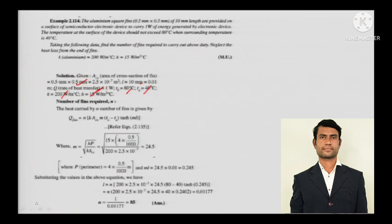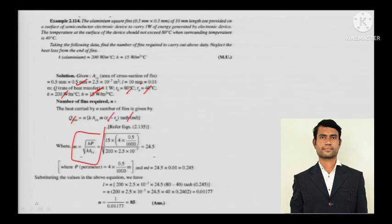N is the number of fins required. You need to calculate M, where P is the perimeter. Since Q is given on the left-hand side, it is now straightforward — everything else is given. With simple mathematical rearranging and calculation, you can get the number of fins as 85.